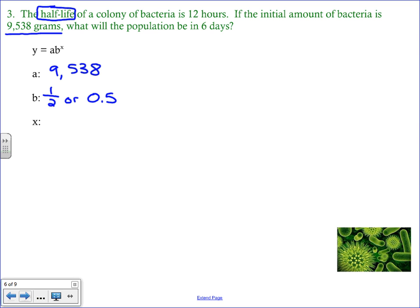Well, since the half-life is 12 hours, that means that in one day, we have two 12-hour periods. That means in six days, we would have 12 12-hour periods. Since there's two per day, six times two is 12. So our X is going to be 12. We now take all this and we substitute that into our equation. So Y equals 9538 times 0.5 to the 12th. And then again, you put this into your calculator and you should get 2.33 grams.